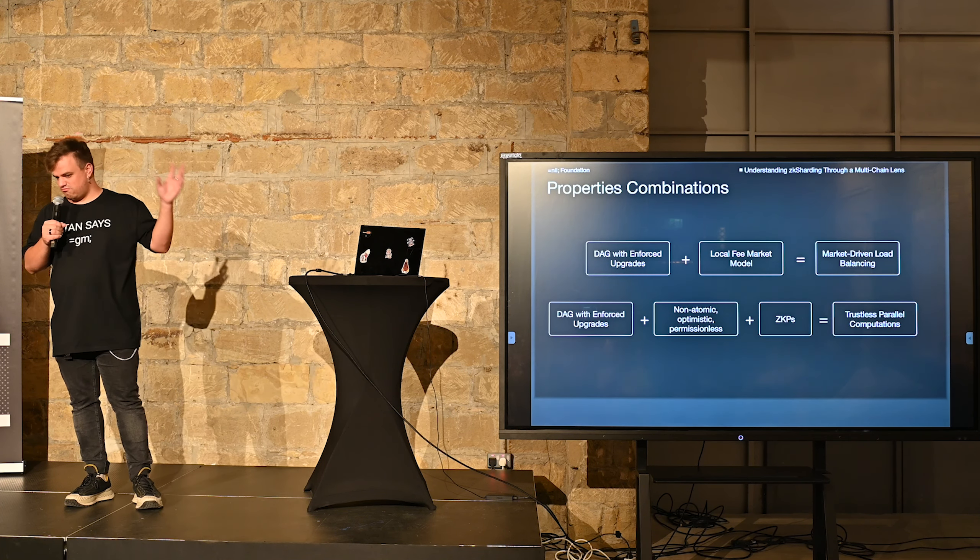Cross-shard messaging is non-atomic, optimistic, and permissionless. The fee model provides a local fee model — each shard defines fees based on load. But of course there is also a base fee related to what the protocol spends for maintaining the main shard — which, as a reminder, doesn't process user transactions and so cannot get fees from them — as well as for maintaining all the L2 infrastructure like proof generation, proof verification, and data availability.